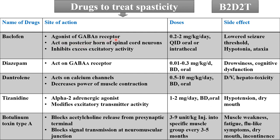Baclofen dose is 0.2–2 mg/kg/day QID orally, or can also be given intrathecally via an intrathecal pump. Side effects: it lowers the seizure threshold — when the drug is stopped, seizures can occur; hypotonia and ataxia can also occur. Diazepam acts on GABA-A receptors; its dose is 0.01–0.3 mg/kg/day BD orally. Drowsiness and cognitive dysfunction are common side effects.